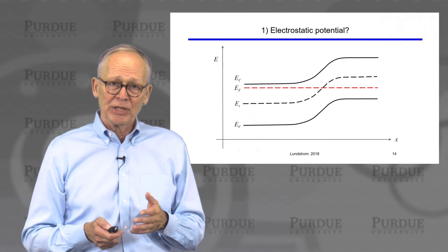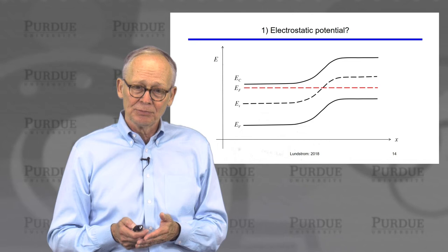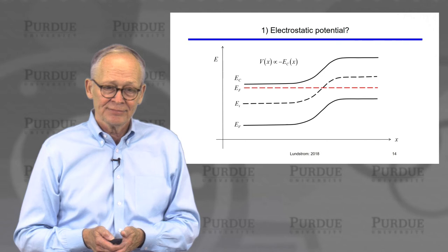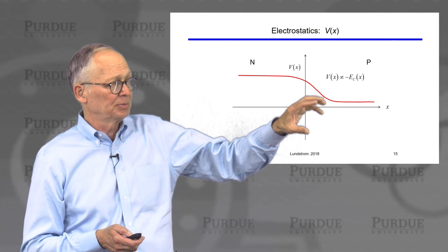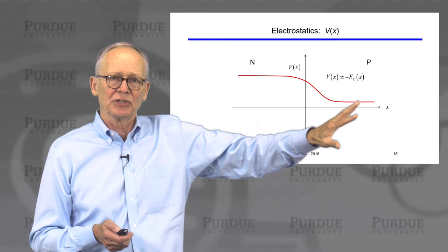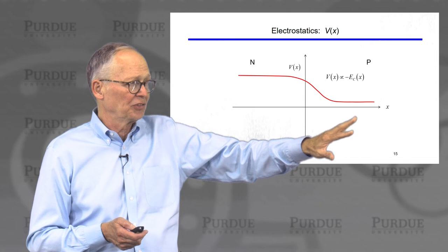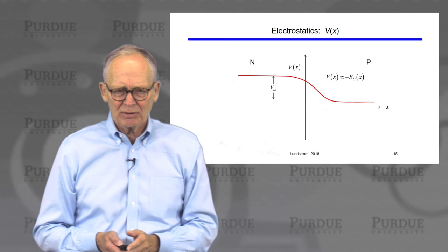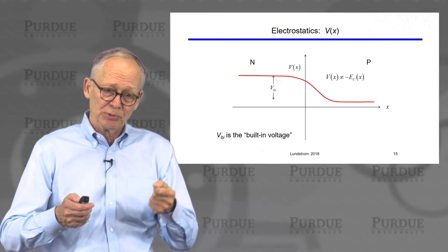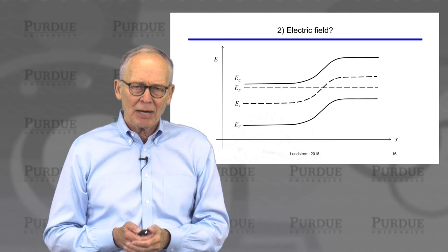For the electrostatic potential: whenever the potential goes up, the electron energy goes down, so we simply take the conduction band versus position and flip it upside down. We get an electrostatic potential versus position that looks like that. The precise value depends on what reference we chose — we might choose one point to be zero. The potential would increase as we go to the left. There is some potential difference between the N side and the P side once we put the two together — this difference is called the built-in voltage of the PN junction.